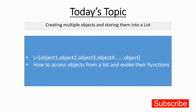Hello everyone, welcome back to the Python Unleashed series. My name is Ajay. Today's topic is how to create multiple objects and store them into a list. We'll be creating multiple objects, storing them in a list, and then accessing those objects and evoking the member functions of each particular object.